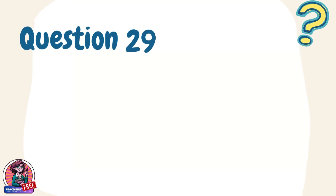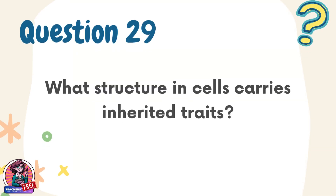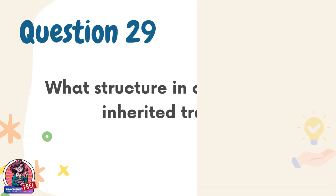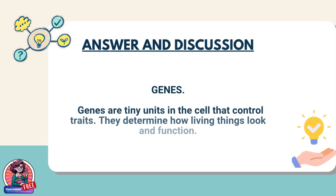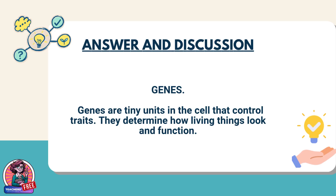Question 29. What structure in cells carries inherited traits? Answer: Genes. Genes are tiny units in the cell that control traits. They determine how living things look and function.